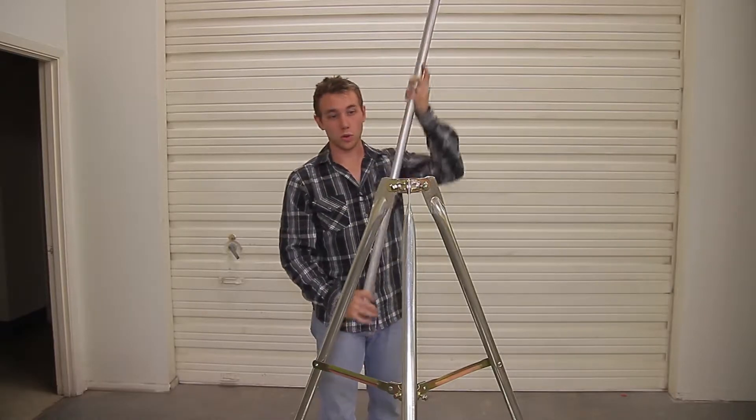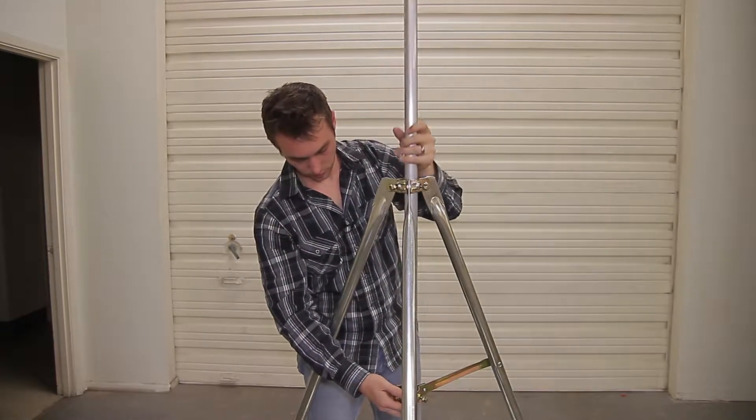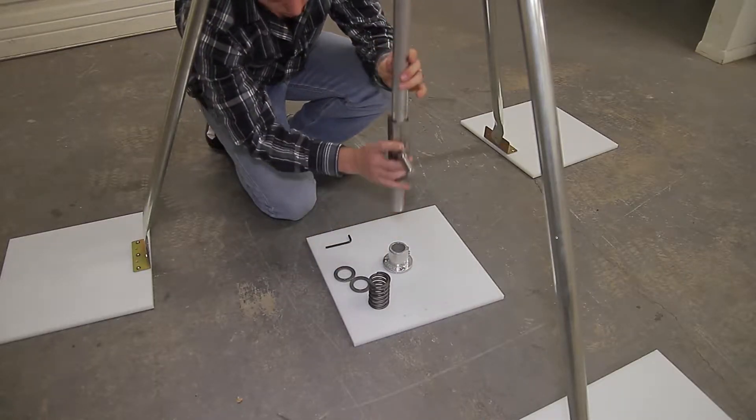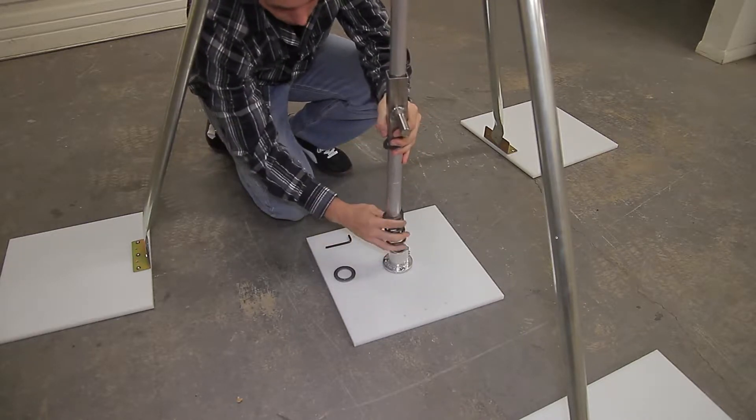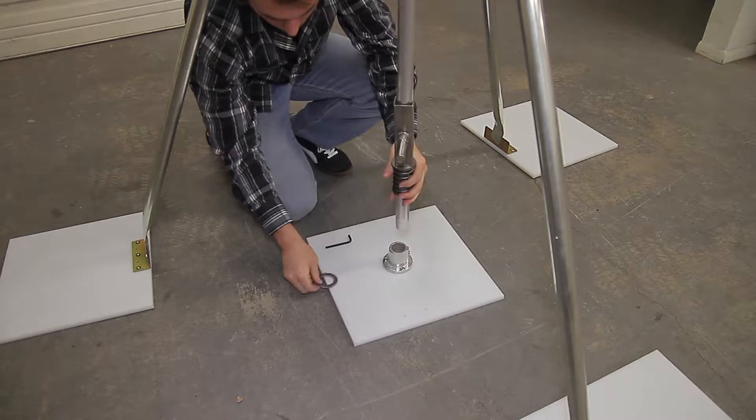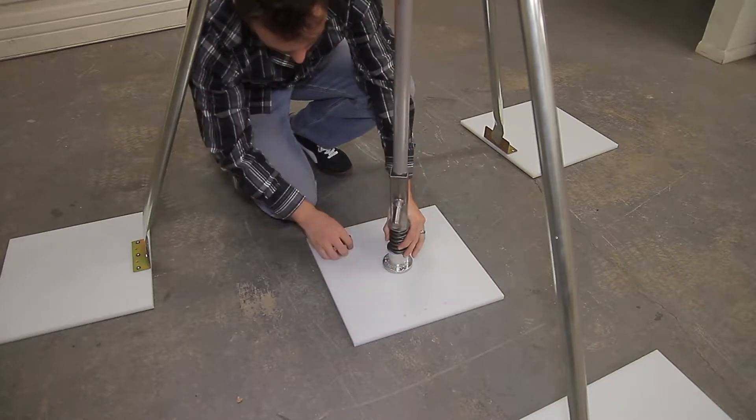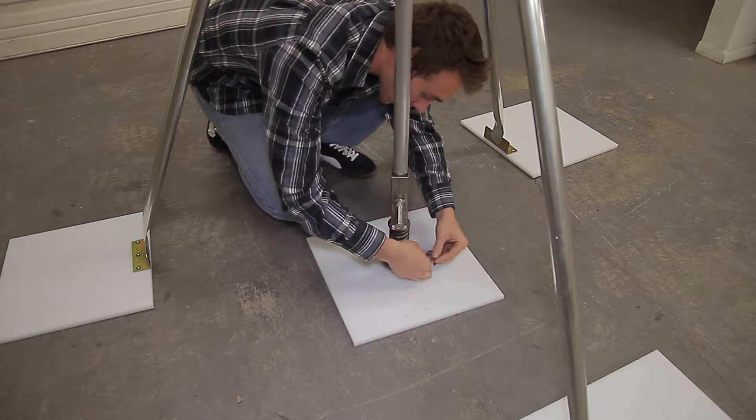We'll slide the center pole through the tripod, place our weight carrier, a washer, the spring, and a second washer, put it down onto the floor mount and tighten that up with an Allen wrench.